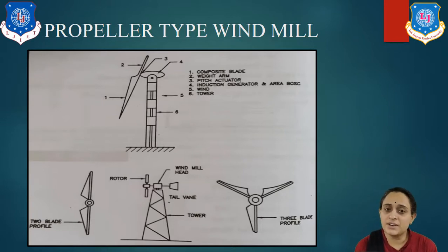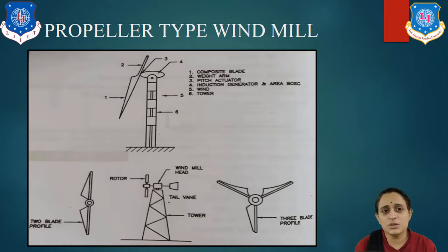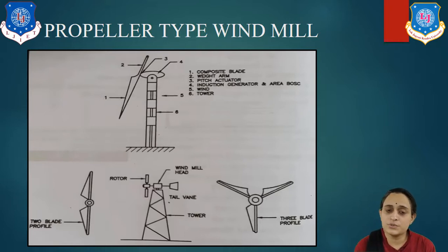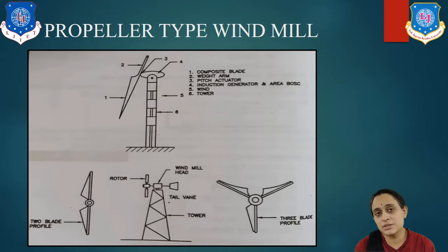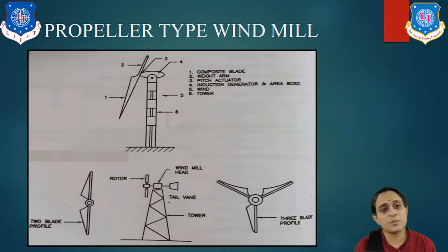Looking at the advantages of propeller type: it rotates at 300 to 400 RPM and can generate electricity well. It can be used for household purposes or inside city areas. It is simple in blade control and uses low wind speed. The main disadvantage is that vibrations are very much produced, which will cause a lot of wear to the equipment. This is the propeller type of windmill.